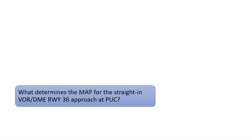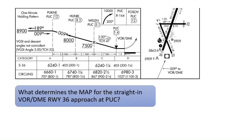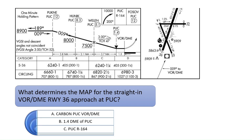What determines the missed approach point for the straight-in VOR-DME runway 36 approach at PUC? As you can see in the chart, the missed approach point is illustrated by the dashed arrow ascending up and to the right, and it is at the carbon PUC VOR-DME. The visual descent point is illustrated at 1.4 DME from the VOR but is not the missed approach point, so answer B would not be correct. Answer C would not be correct because the 164-degree radial is part of the missed approach procedure, not the missed approach point. The correct answer is A.